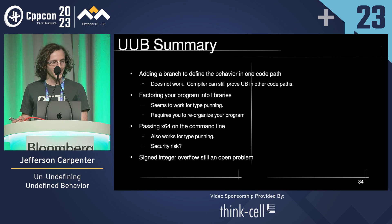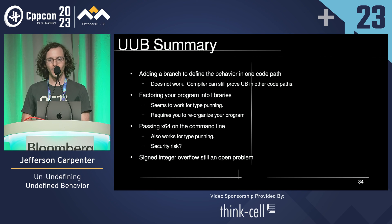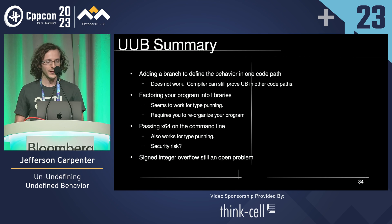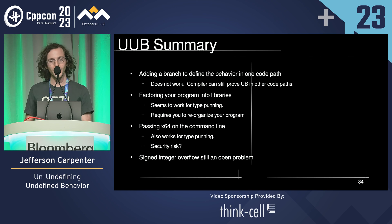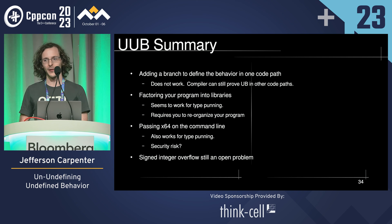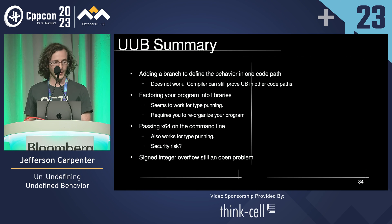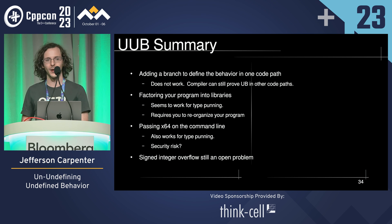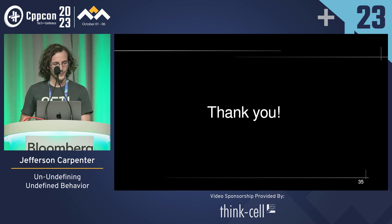In conclusion: adding a branch to make the definition of the behavior sometimes defined doesn't work because the compiler can still show it's not defined in the other code paths. Some other strategies where the compiler is not aware of the code that causes the UB at the appropriate time — some of those can work for type punning situations, but signed integer overflow is still an open problem. I'm interested in any other ideas you have to do this for more UB cases and even less invasively. Thank you.